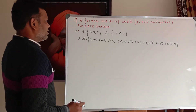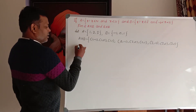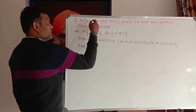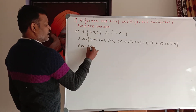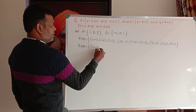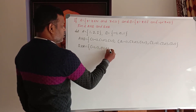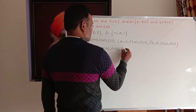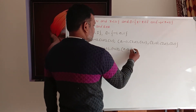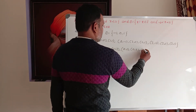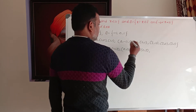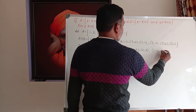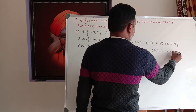This is A cross B. Starting with 2 from Set A: (2, minus 1), (2, 0), (2, 1). Next, starting with 3: (3, minus 1), (3, 0), (3, 1). Now B cross A — Set B elements paired with Set A elements: (minus 1, 1), (minus 1, 2), (minus 1, 3), (0, 1), (0, 2), (0, 3), (1, 1), (1, 2), (1, 3).